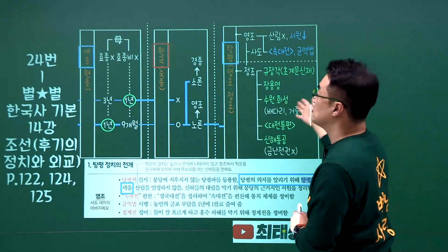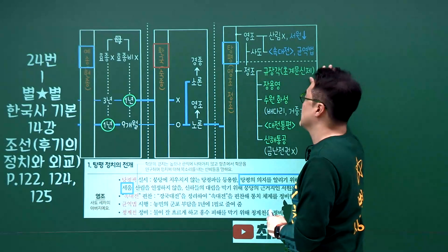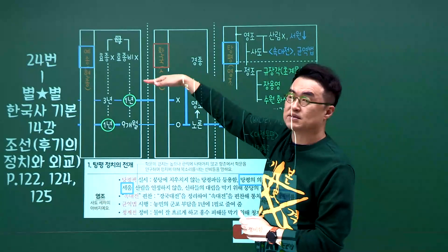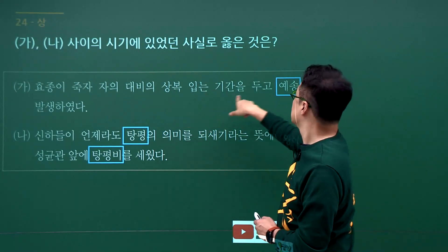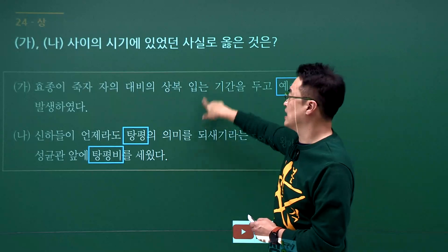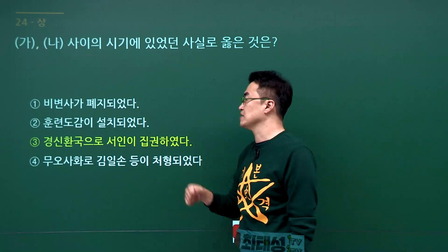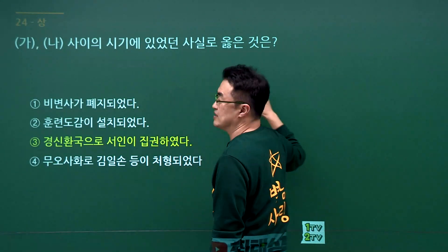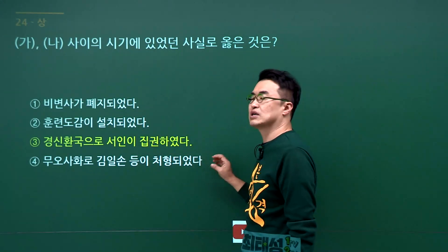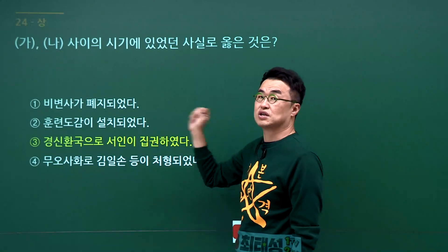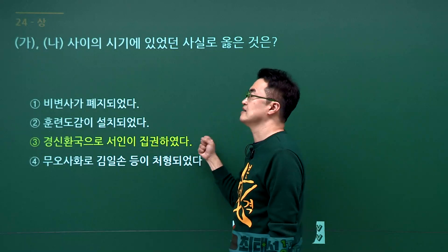조선 후기 정치 흐름 문제입니다. 예송 논쟁 다음이 환국이었고, 그 다음이 탕평정치, 그 다음이 세도정치로 이어집니다. 문제에서 예송 논쟁과 탕평 사이의 가나 시기에 무엇이 있었느냐는 물음에 환국이 들어갑니다. 정답은 3번입니다. 비변사 폐지는 흥선대원군 때, 훈련도감 설치는 임진왜란 때, 무오사화는 조선 전기입니다. 경신환국은 조선 후기 숙종 때이므로 시기가 맞습니다. 정답은 3번입니다.